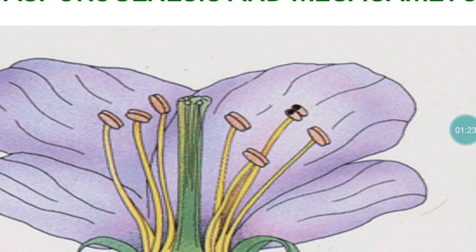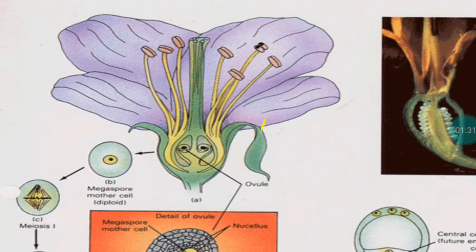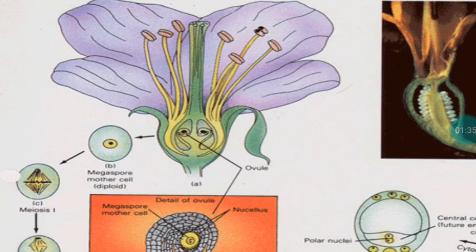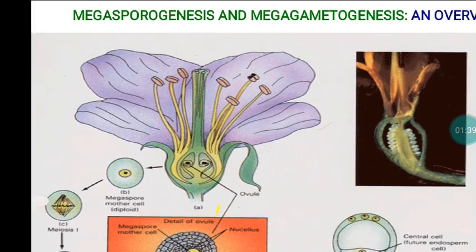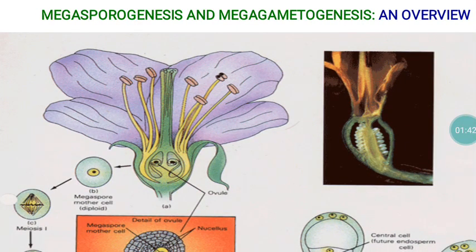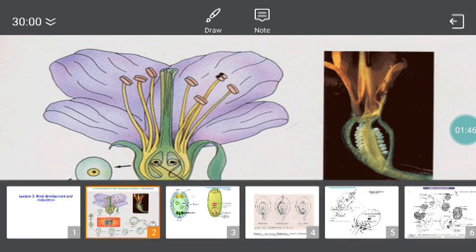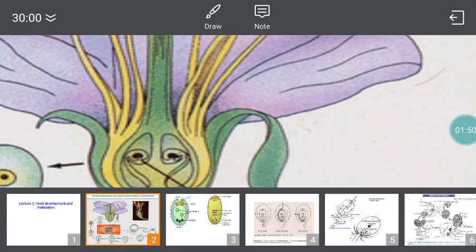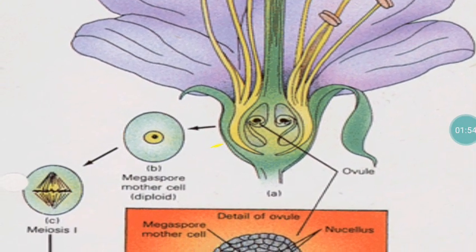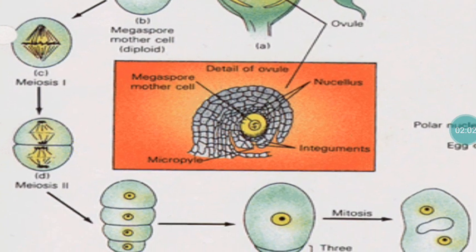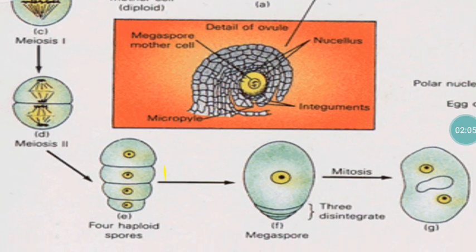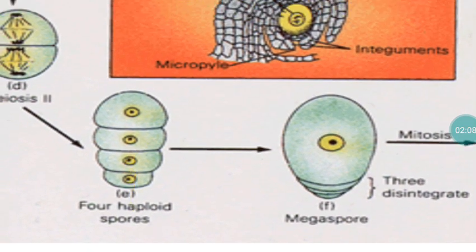Before getting into the fertilization process, I want to give information regarding megasporogenesis. The female organ runs from the stigma to the ovary. Within the ovary, ovules are present. The ovule tissues contain megaspore mother cells, which are diploid. They undergo meiosis — reduction divisions — leading to the formation of four haploid cells. Out of these four haploid cells, three cells degenerate and one cell alone survives.